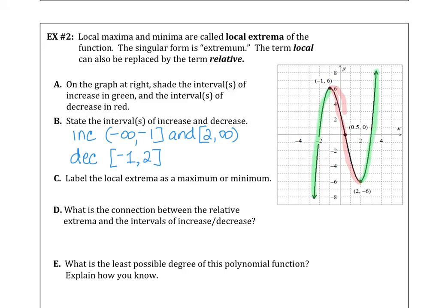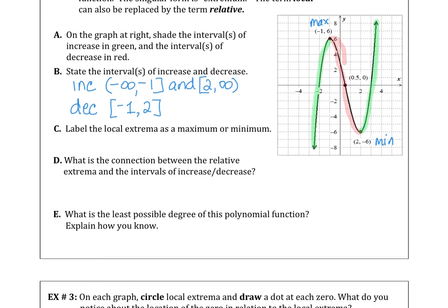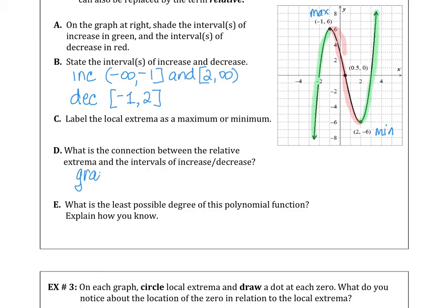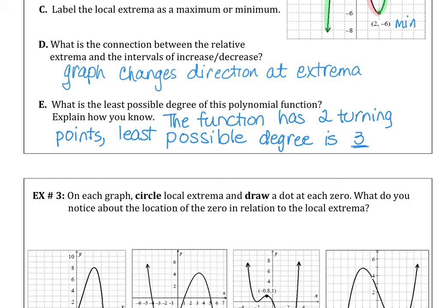We label the local extrema as maximum or minimum. There is a maximum at the point (negative 1, 6) and a minimum at (2, negative 6). The connection between the relative extrema and the intervals of increase and decrease is that the graph changes direction at the extrema. The least possible degree of this polynomial is 3 — formally called a cubic polynomial — because the function has two turning points.